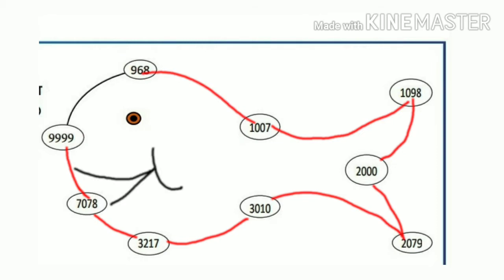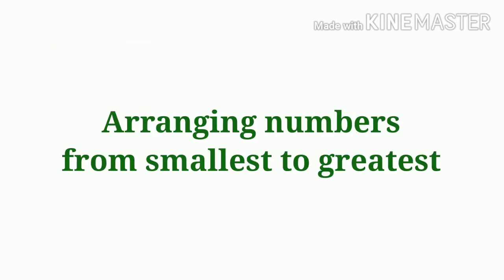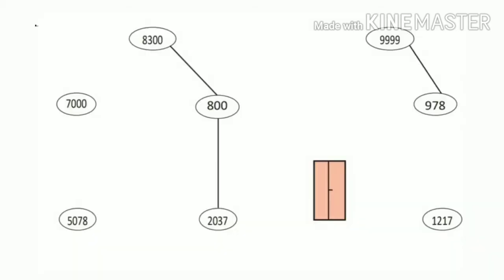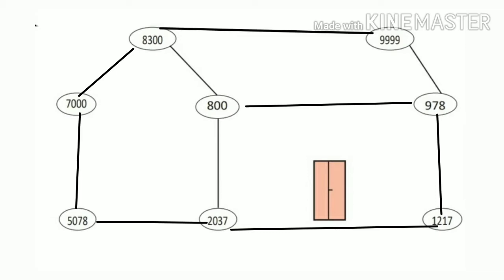The next sum on page 24 is to join the numbers in ascending order to get a picture. Ascending order means arranging numbers from smallest to greatest. Connect: 800, 978, 1,217, 2,037, 5,078, 7,000, 8,300, and finally 9,999.